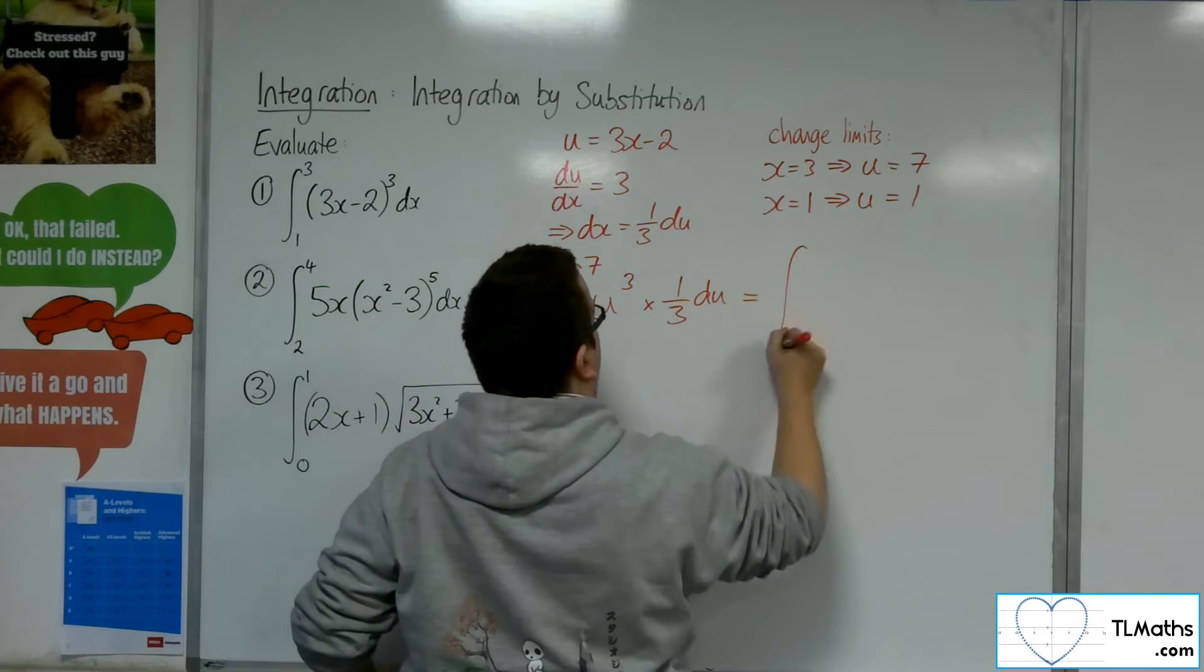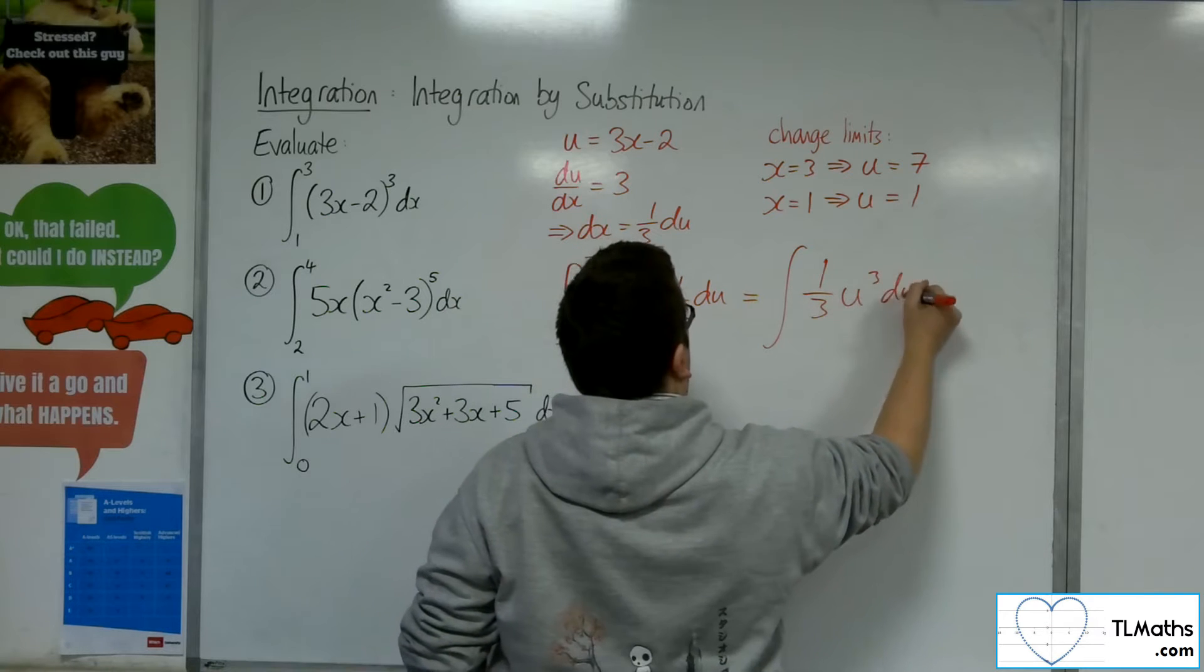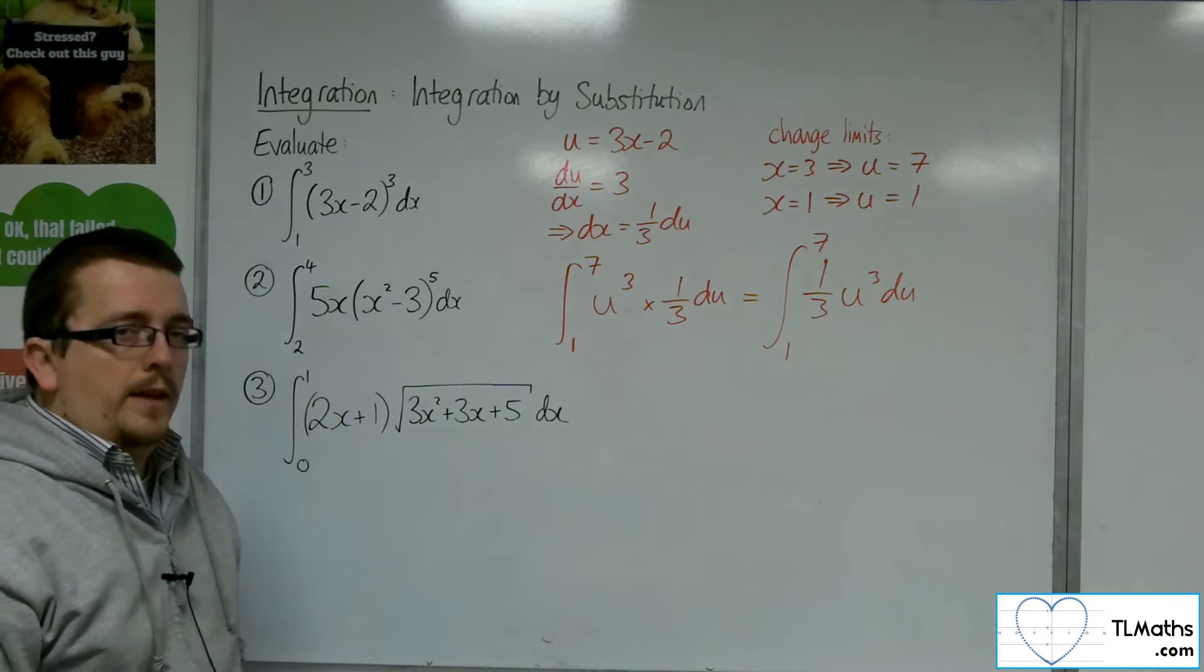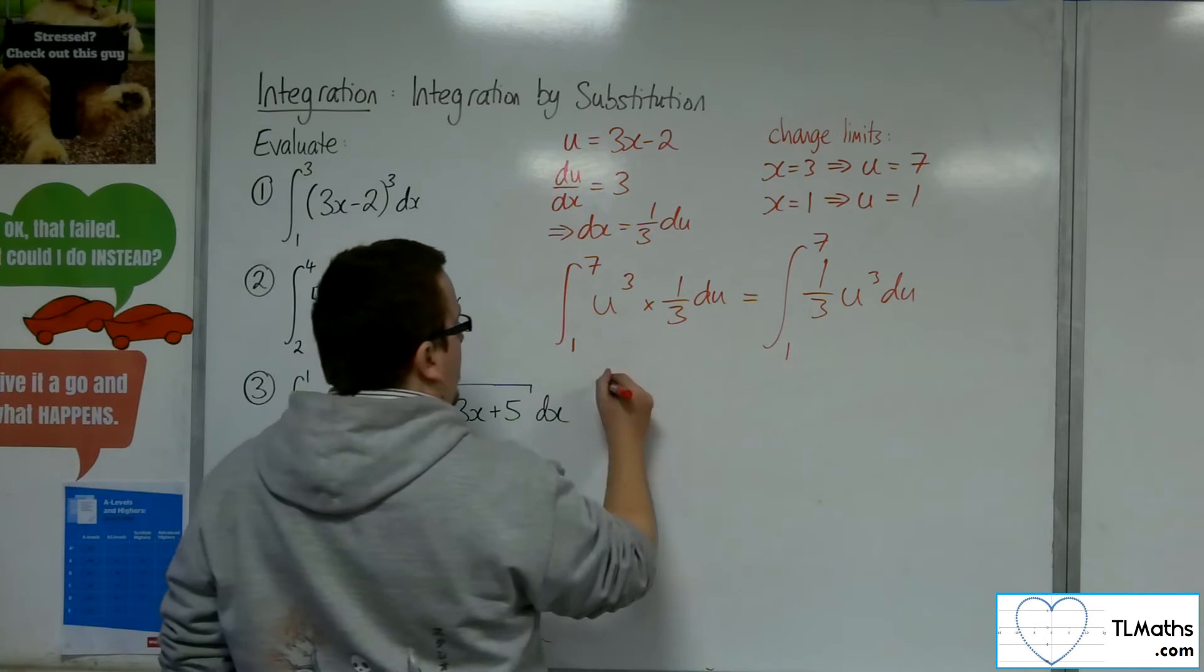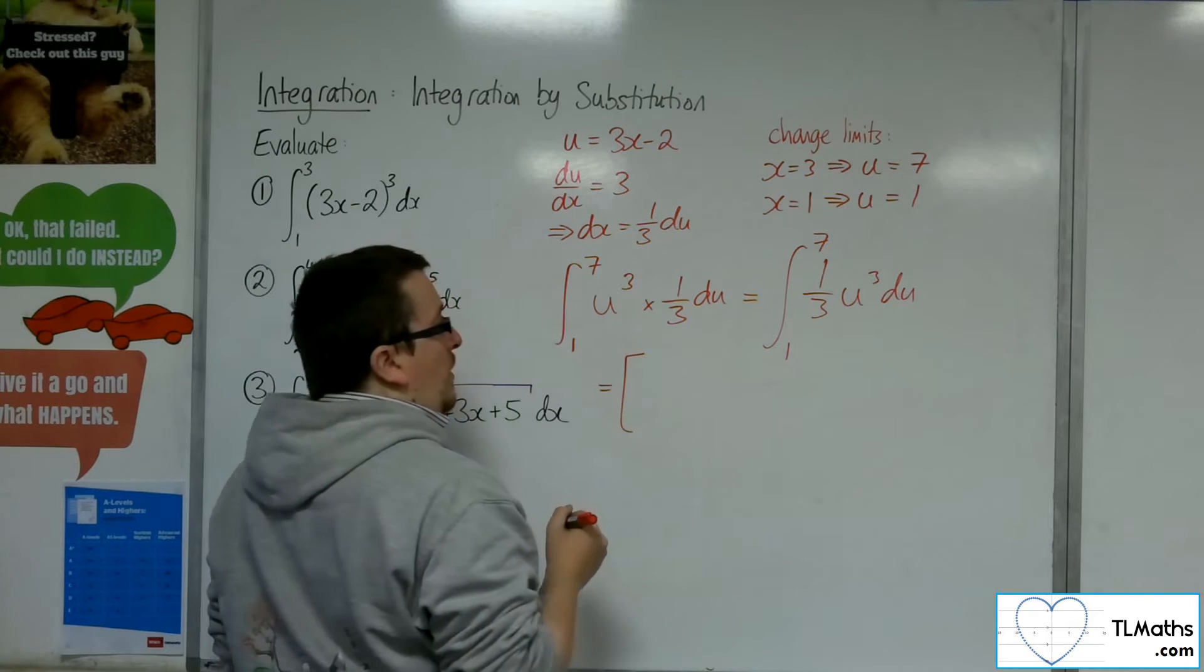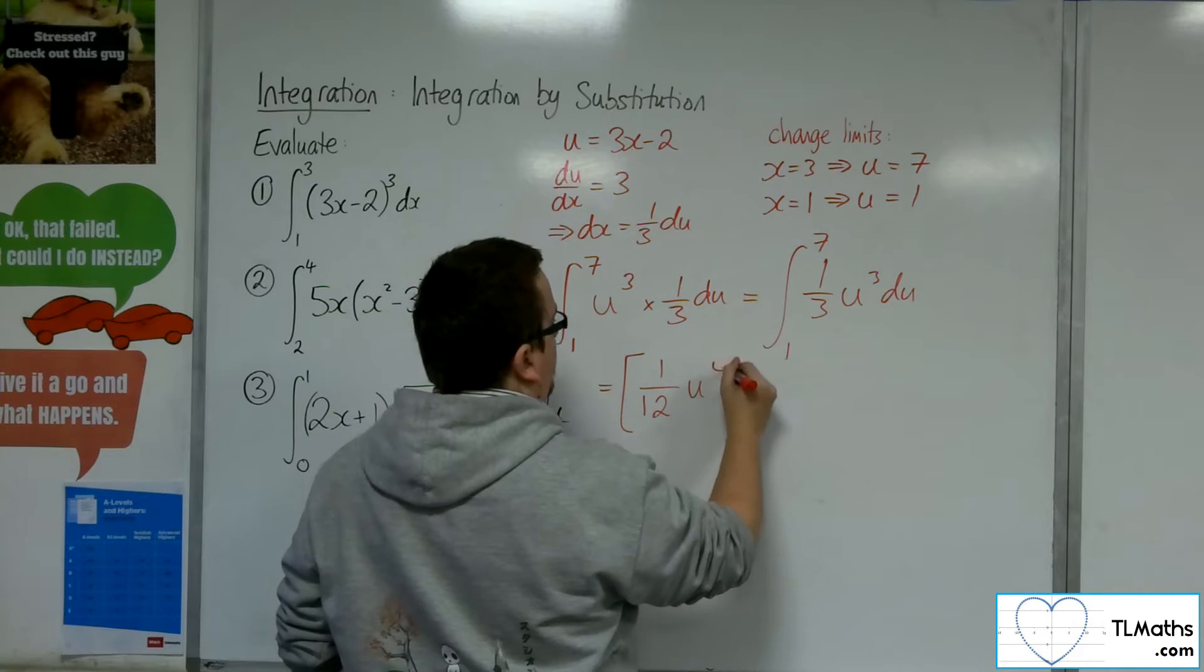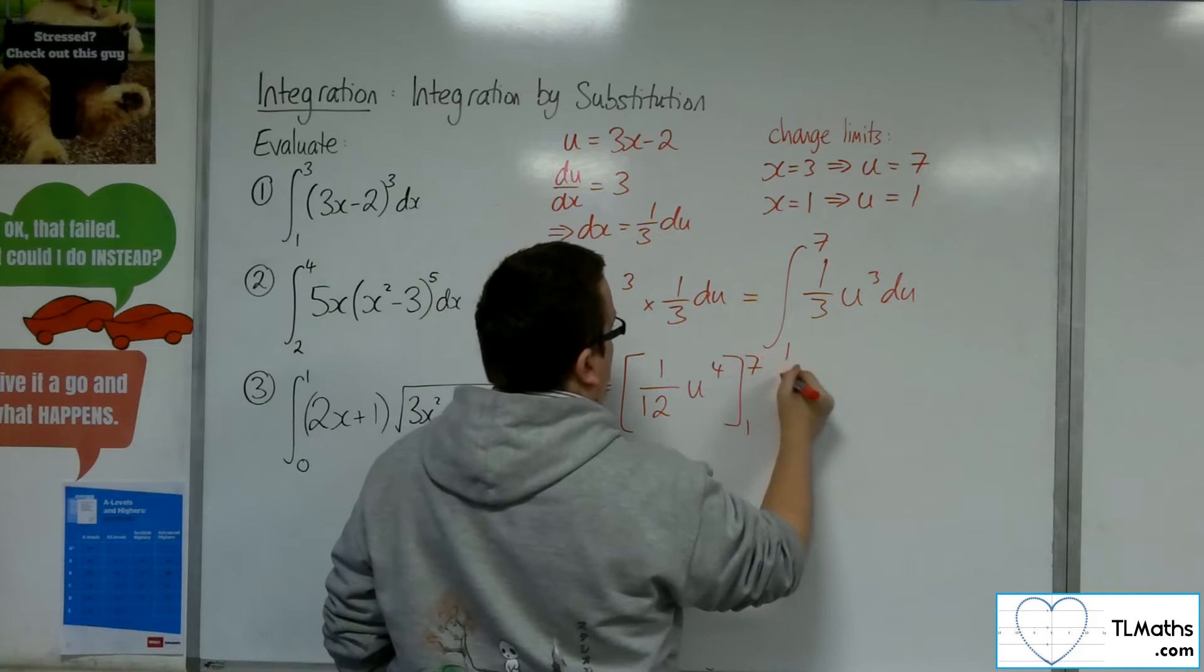So I can tidy that up, like so. Right. So now I can integrate. Adding 1 to the power divided by the new power will get 1 over 12, u to the 4, evaluated between 1 and 7.